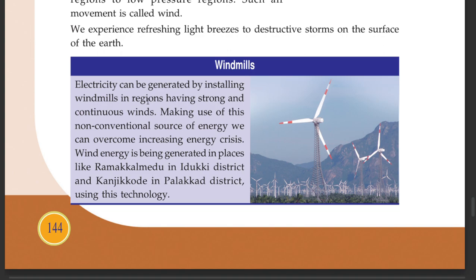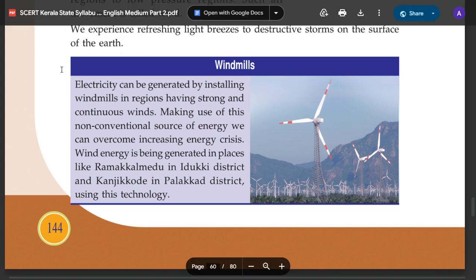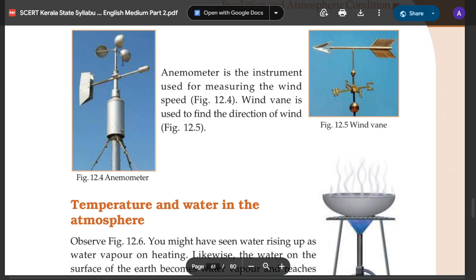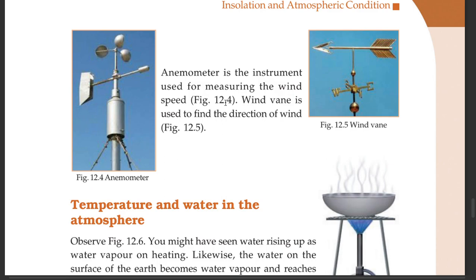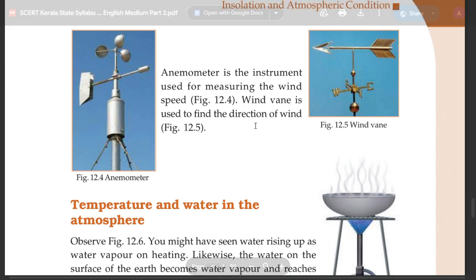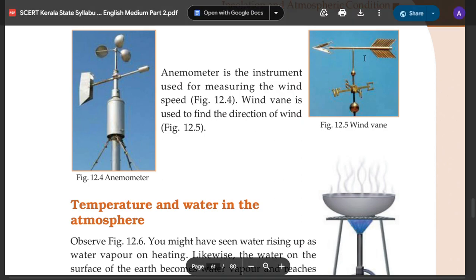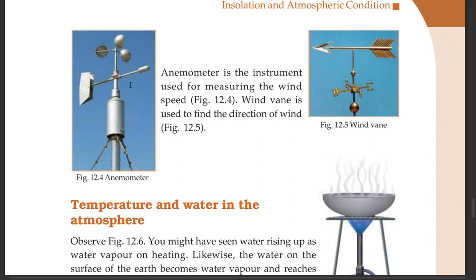An anemometer is an instrument used for measuring the wind speed. Wind vane is used to find the direction of wind.